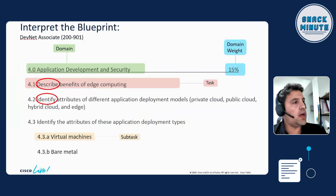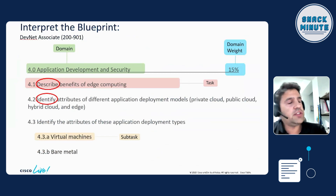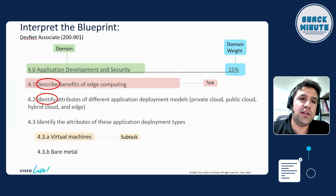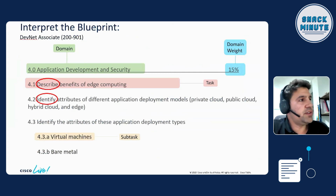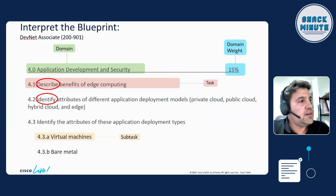When you go through the blueprint, you'll see specific words at the beginning of each task. As you can see in this slide — 4.0 is the domain explaining what will be covered in that section, then 4.1, 4.2 are the tasks, a closer look at the topics covered. I circled the first verb of each task in this DevNet Associate Blueprint example: describe, identify, implement, configure, explain. These specific verbs — the first verb on each task — set the tone and set the difficulty.